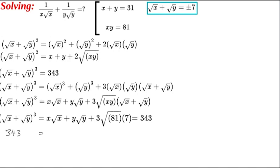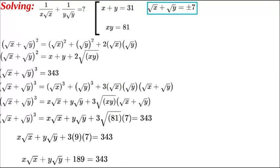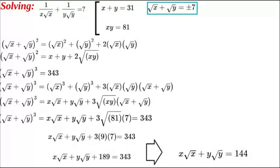We have x√x plus y√y, plus 3 times 9 times 7, which gives us 189. So we get x√x plus y√y equals 343 minus 189, which gives us a result of 154.